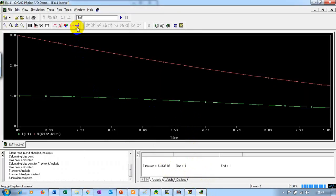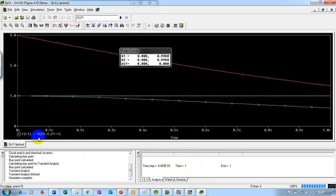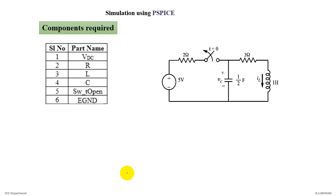Click on toggle cursor. We are getting the current as 0.998 approximately 1. And voltage of capacitance is 2.994 approximately 3 volt. That is what we have got as theoretical calculations.